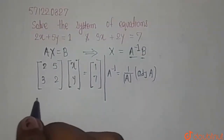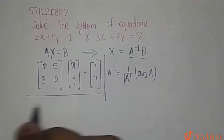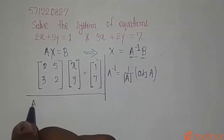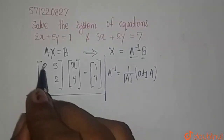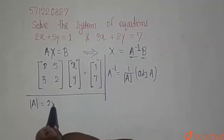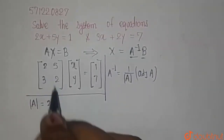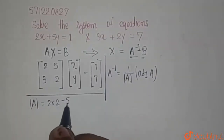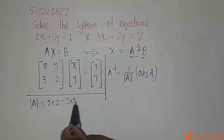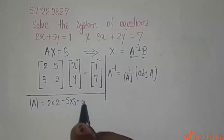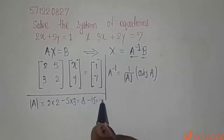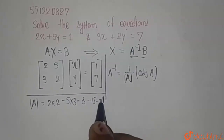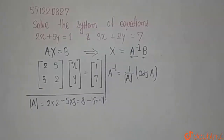We know that the determinant of A can be written as 2 into 2 minus 5 into 3. So it is going to be 8 minus 15, which finally gives minus 11.